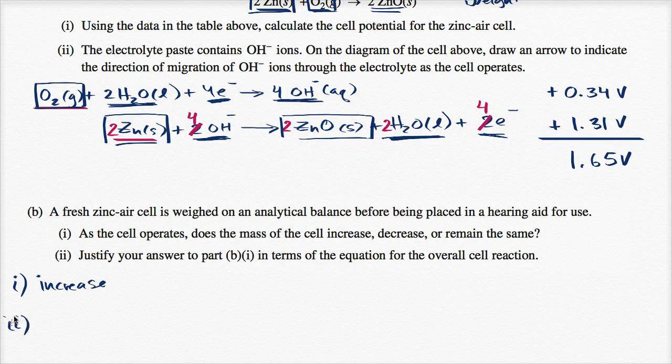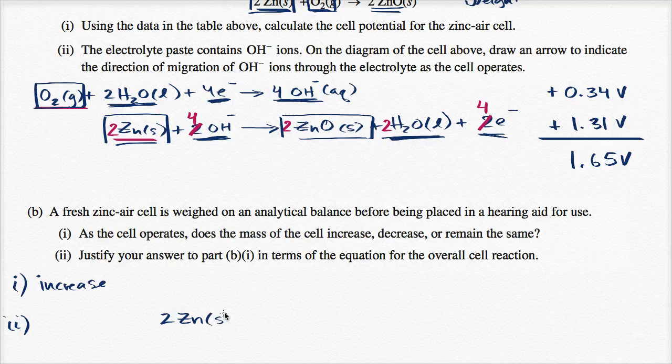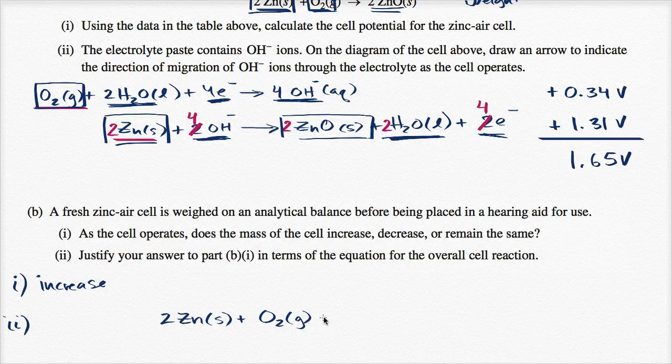So let me just write the overall cell reaction. So two zinc molecules react with one molecular oxygen, one O2, to yield two zinc oxide molecules.